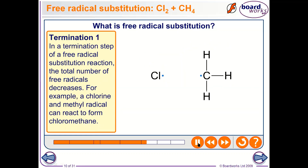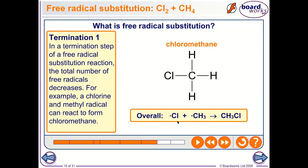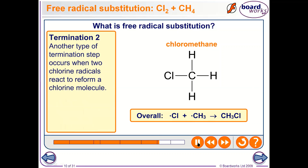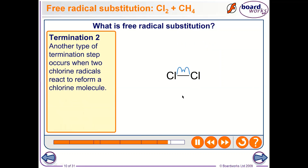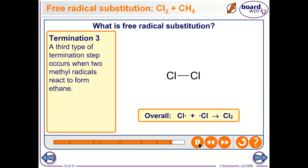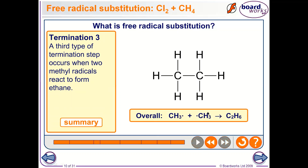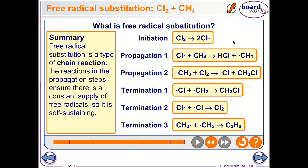To stop this reaction, we must eliminate all free radicals — this is termination. Termination 1: a chlorine free radical reacts with a methyl free radical to form chloromethane. Termination 2: a chlorine free radical combines with another chlorine free radical to give chlorine gas. Termination 3: a methyl free radical reacts with another methyl free radical to give ethane.